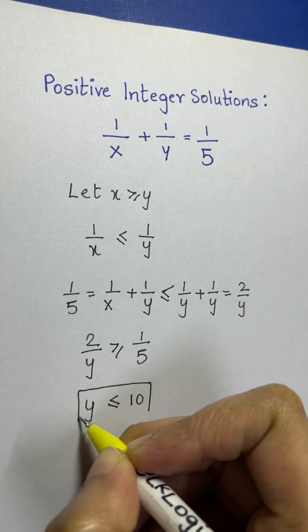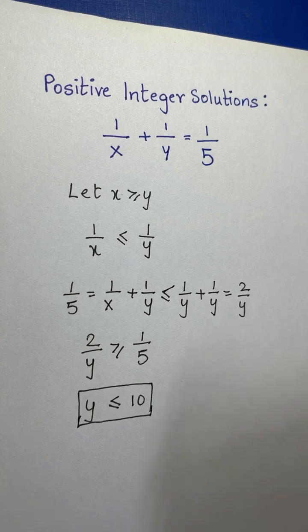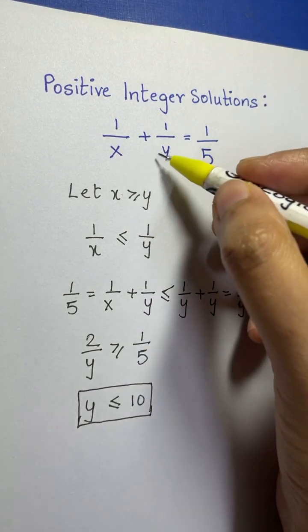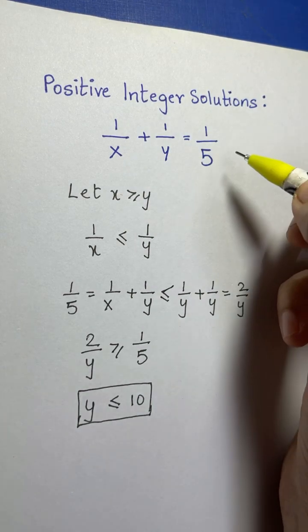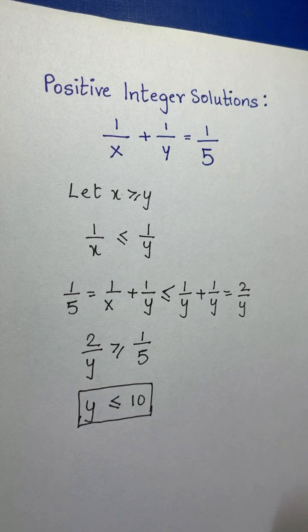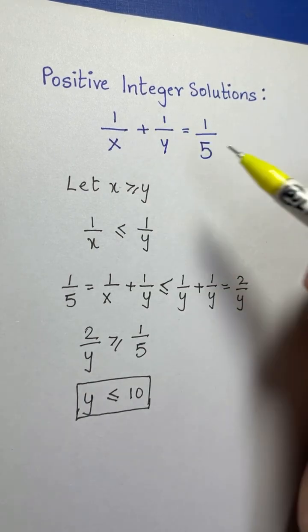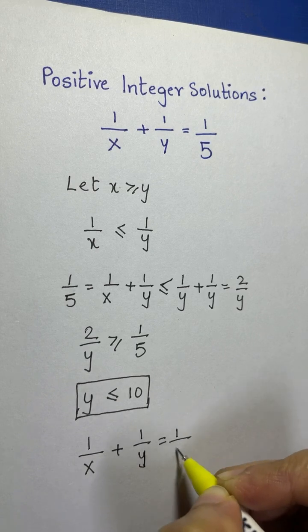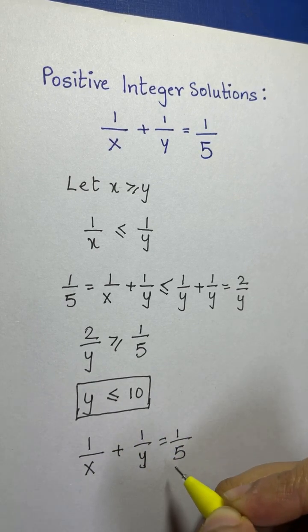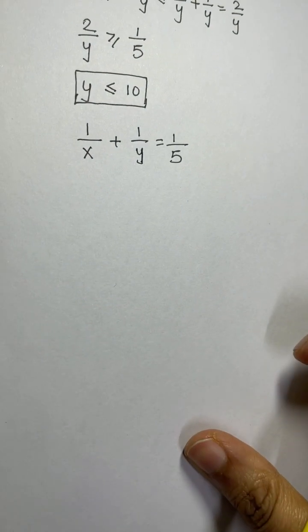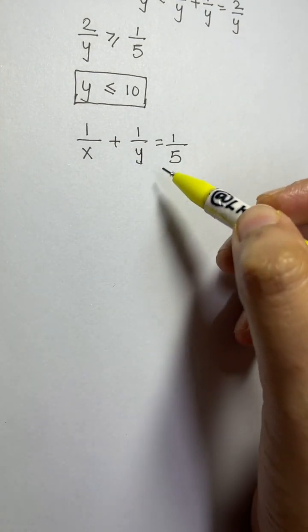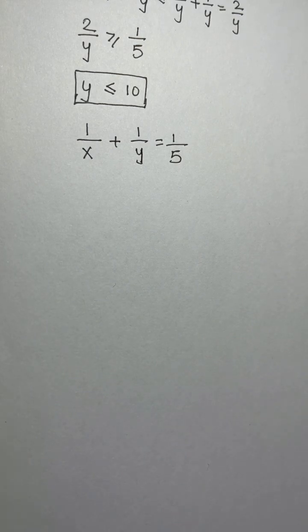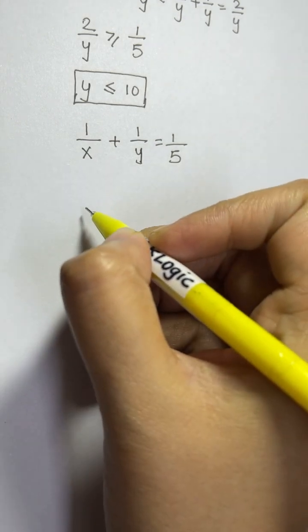Now x can be rewritten in terms of y, since they are in denominators. We go back to the equation 1/x + 1/y = 1/5 and multiply both sides by 5xy.